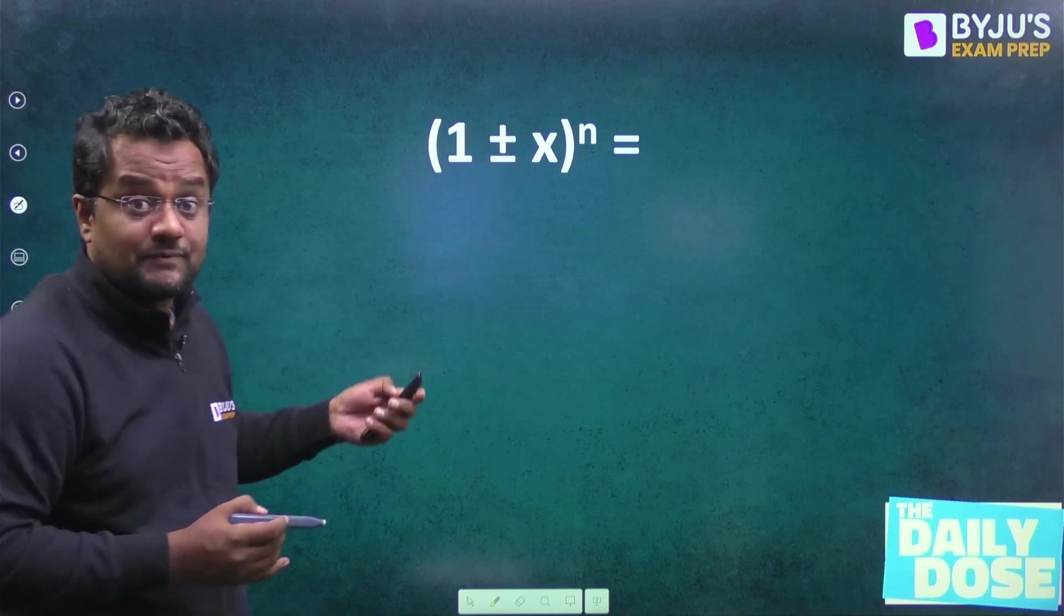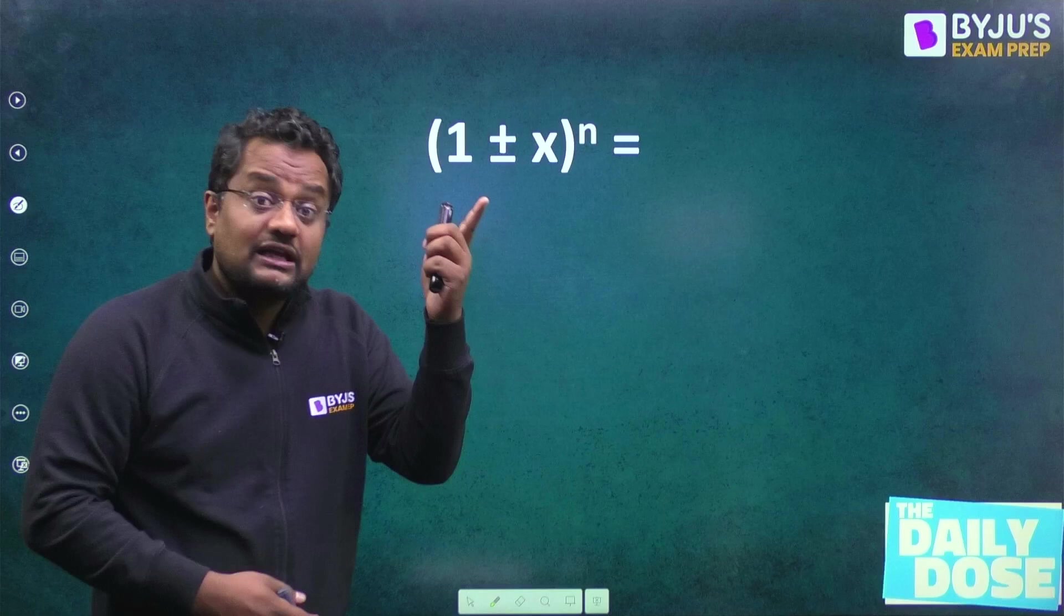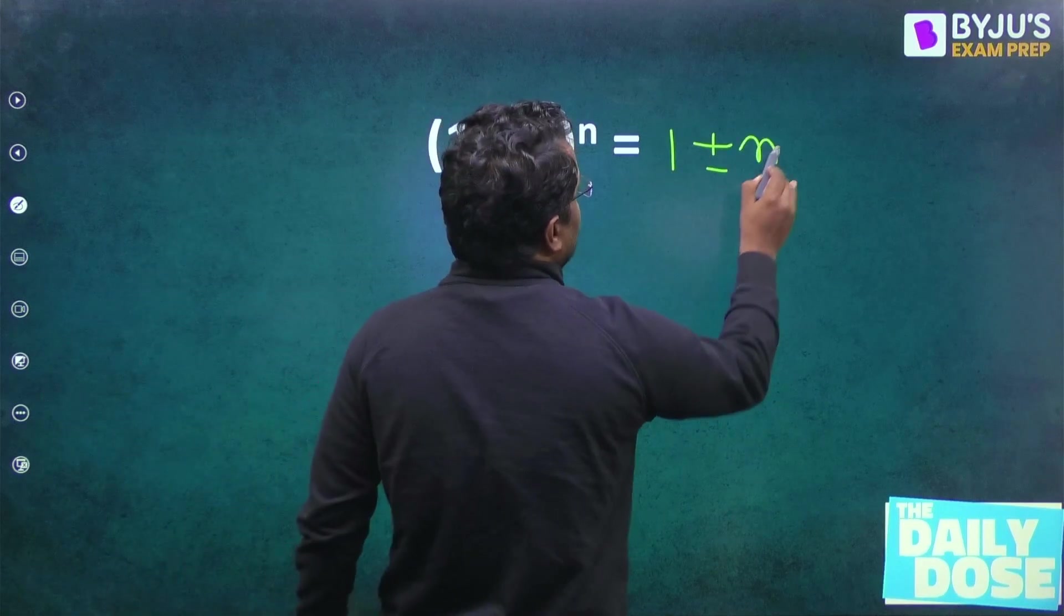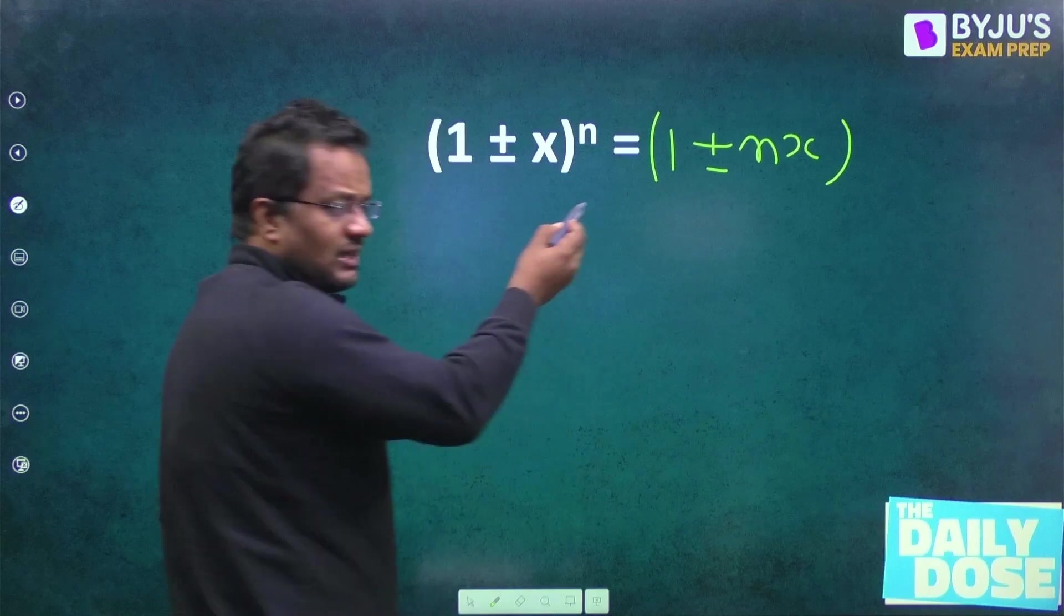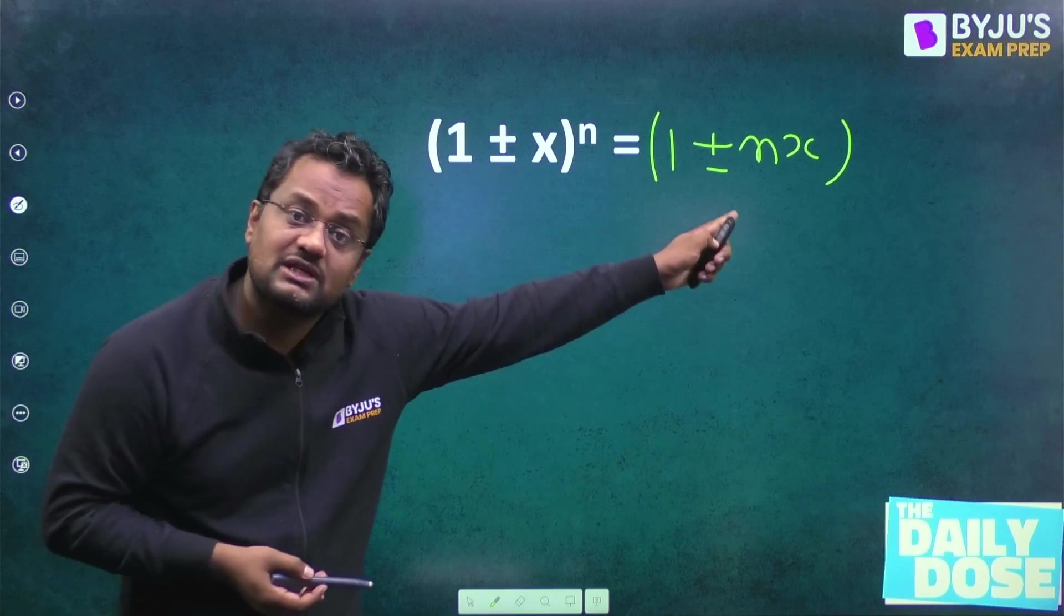Suppose sometimes these kinds of things come, especially in the slope correction in surveying and in economy part in PERT CPM. So you have to write this like this. Whenever x is very less than one, you can directly do this. If the calculator is not allowed, they will be giving the right answer from this expression only.